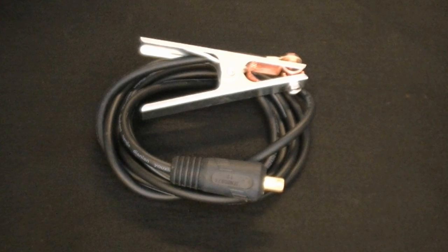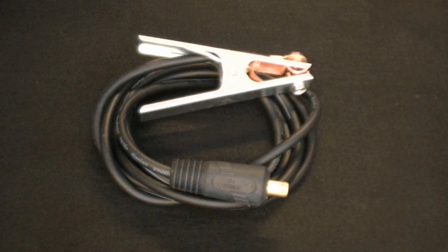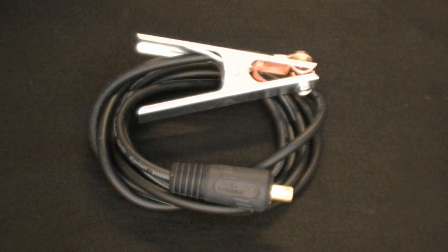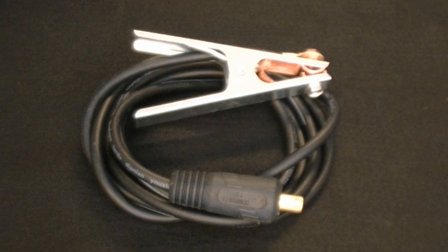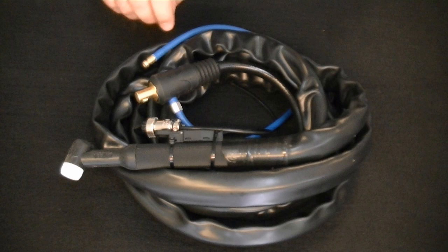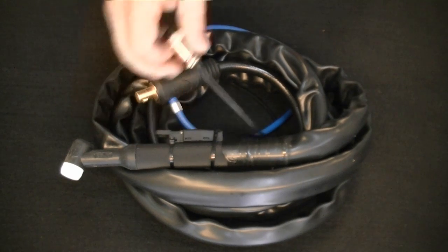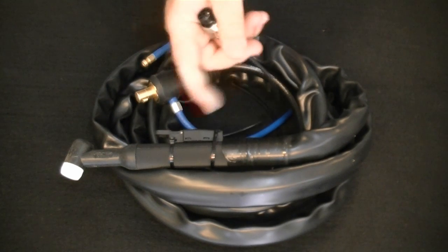The unit comes equipped with almost everything you need to get started welding. As part of the standard package, you will receive a heavy-duty copper reinforced work clamp, a 26 series air-cooled torch with a 12.5 foot cable along with a remote switch for 2T and 4T operation.